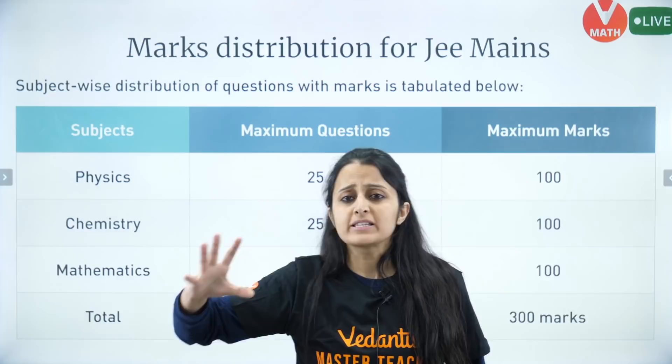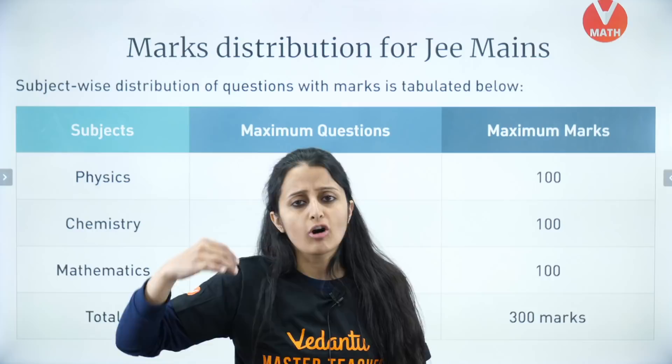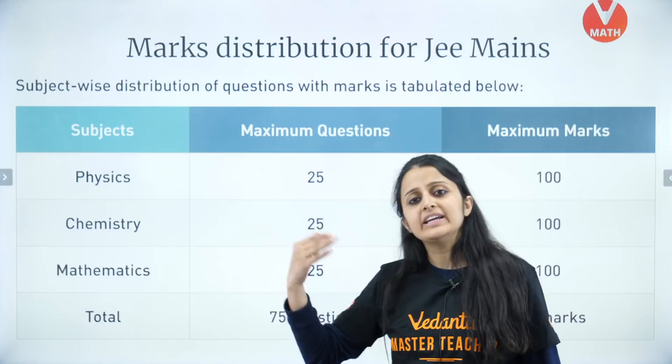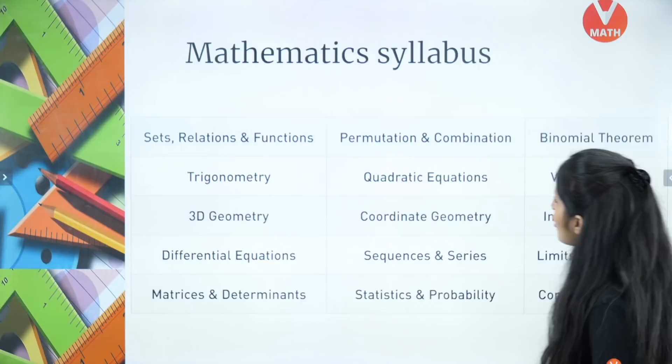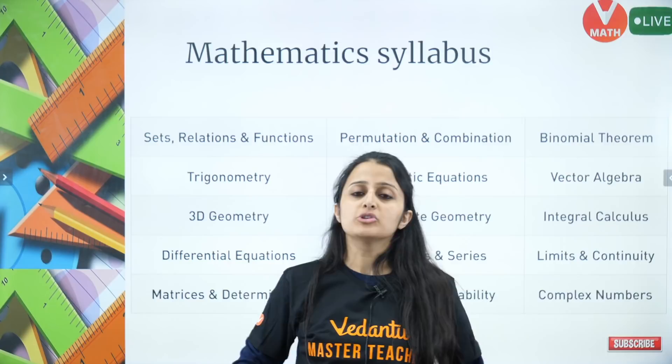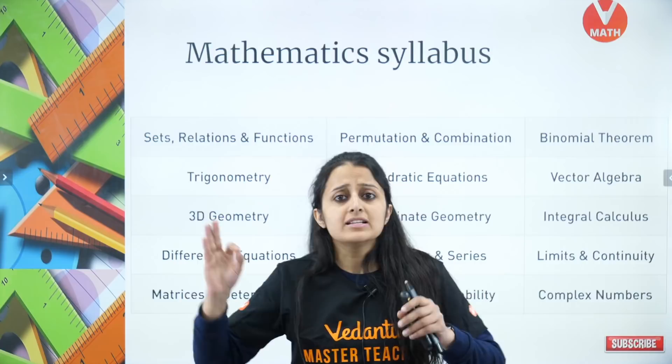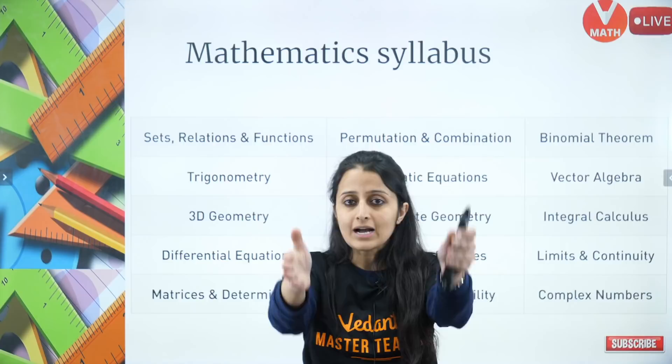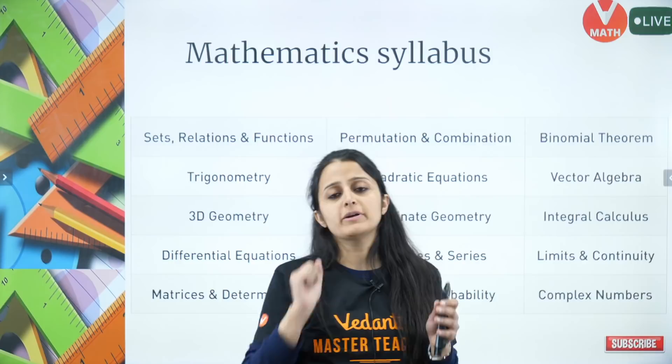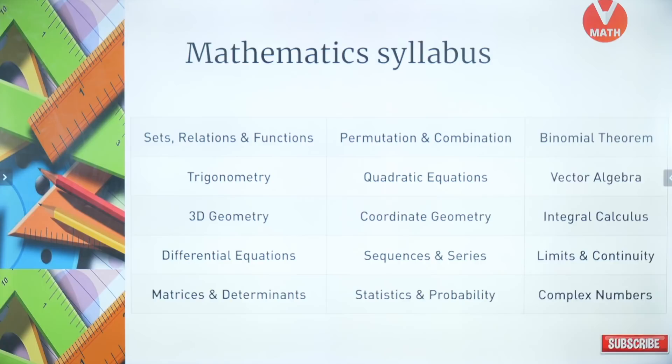JEE Main has 25 questions — 20 are MCQs and 5 are numericals. This is something we all are aware of. Here is the math syllabus. You should have a copy of the syllabus stuck right in front of you, because it is very important to know the sub-topics from every chapter where you are tested.